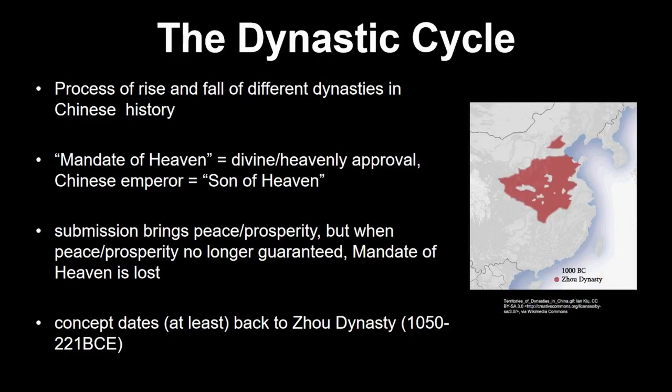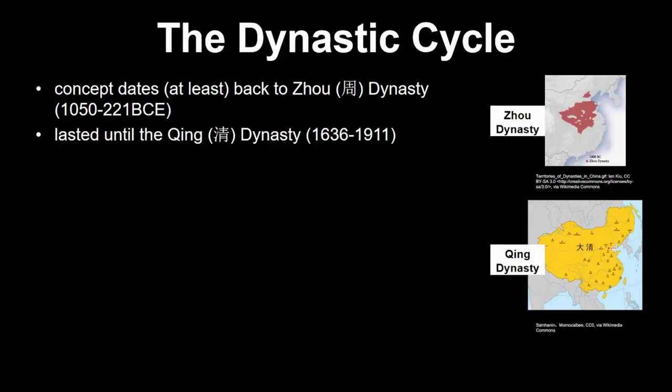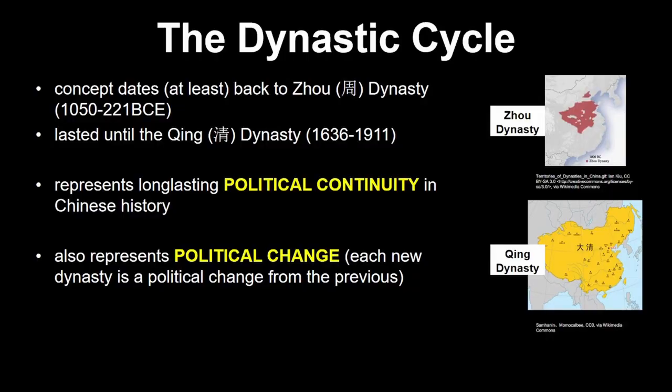The concept of the dynastic cycle and the mandate of heaven existed all the way back to the Zhou dynasty, more than 2,000 years before the Song, and remained constant all the way up until the Qing dynasty. That's a super important example of continuity. And also a change — because each time you have a new dynasty, that's an example of political change. Not only did the Song claim the mandate of heaven, so did the Jin and the Western Xia, all at the same time.